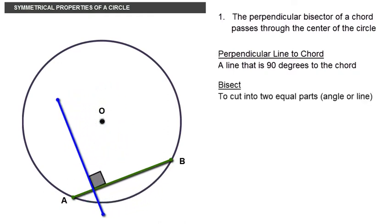The word bisect implies cut into two equal parts. The perpendicular bisector to the chord is thus the line that is perpendicular to the chord and cuts the chord into two equal lengths.